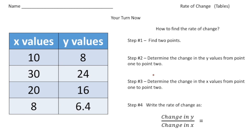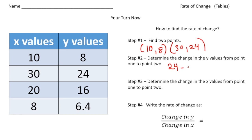Now for the last problem. Same process — take two points: (10, 8) and (30, 24). Step two: determine the change in y-values — 24 minus 8 gives 16. Step three: determine the change in x-values — 30 minus 10 gives 20.